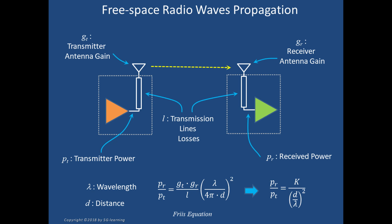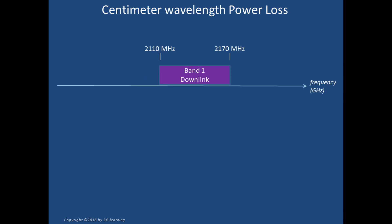As may be seen, the power loss increases as the square of the distance over wavelength ratio. We focus our attention on a 5G radio wave in the centimeter spectrum region, for example in the 2100 megahertz band. What will be the power loss if both antennas have unity gain and the distance between transmitter and receiver is 100 meters? The wavelength is 14 centimeters.